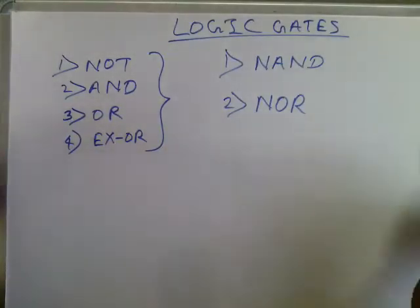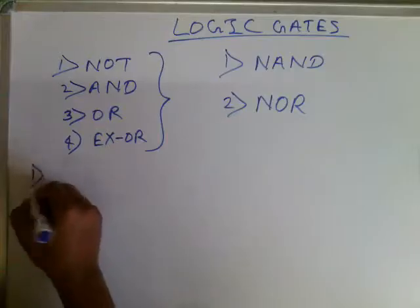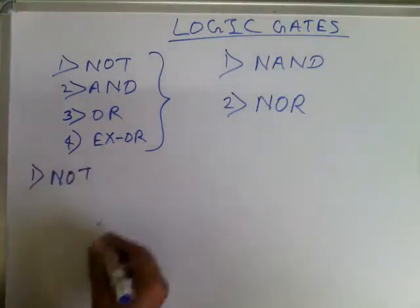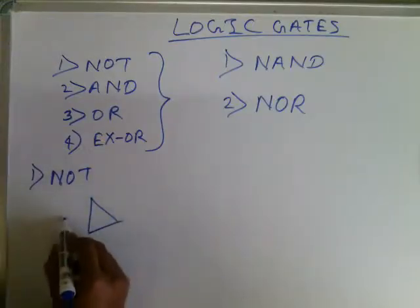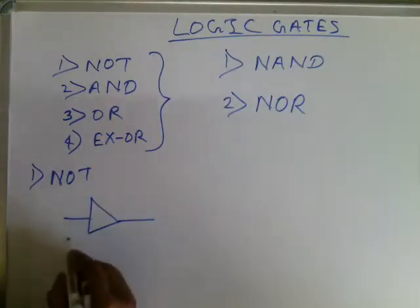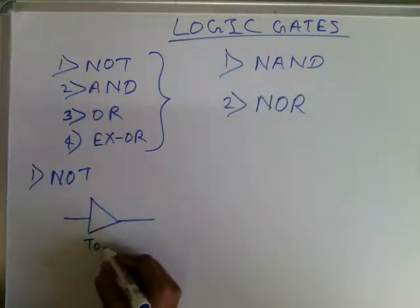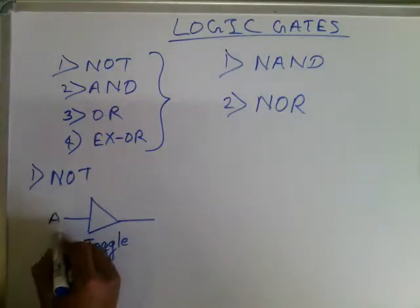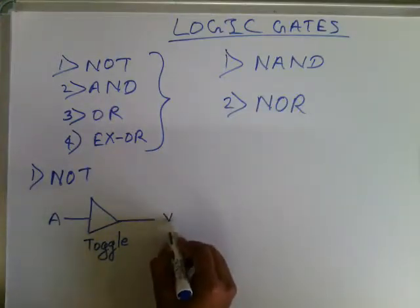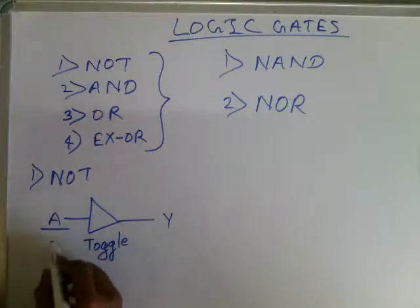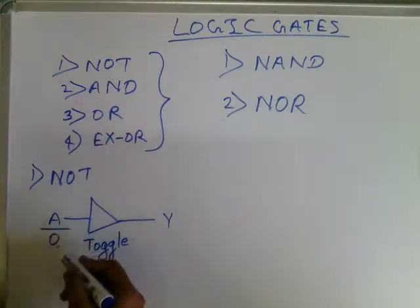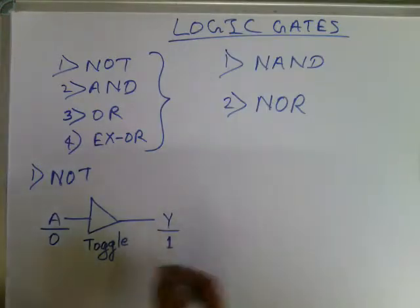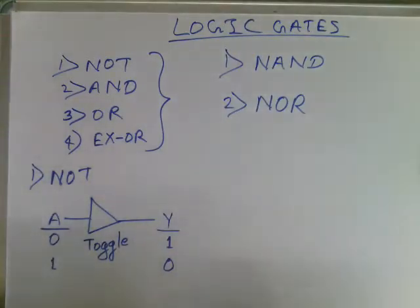We will see the diagrammatic representation of NOT, AND, OR, and XOR gates. First, the NOT gate — it is represented like this. It just toggles the input data. If A is the input and Y is the output, if you input 0 then the output will be 1, and if you input 1 then the output will be 0. It just reverses the output.